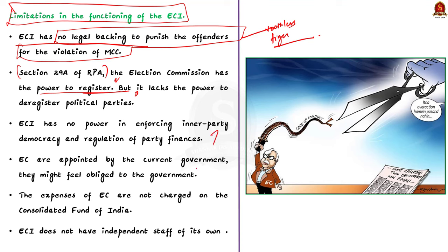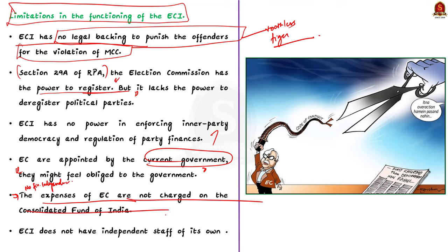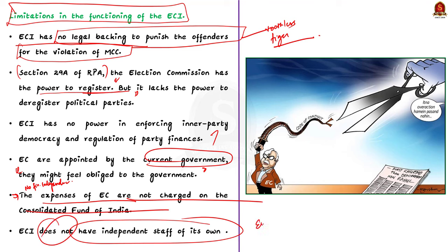This also acts as an impediment in the functioning of the Election Commission of India. Then there is executive influence on the appointment of the ECI — the government continues to appoint election commissioners on its own, in spite of multiple commissions advising it to stop this practice. Since commissioners are appointed by the current government, they might feel obliged to it, which affects impartial functioning. Additionally, the expenses of the ECI are not charged on the Consolidated Fund of India, making it dependent on the union government for financial matters. Moreover, the ECI does not have an independent staff of its own and has to depend on the staff of central or state governments for effective functioning, which limits its capacity to enforce free and fair elections.